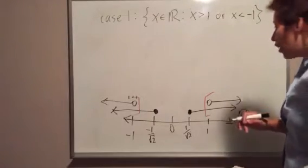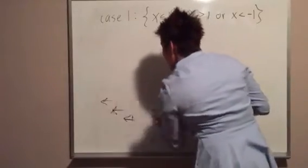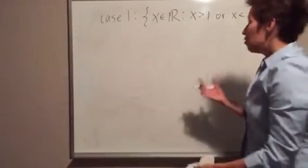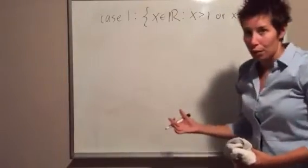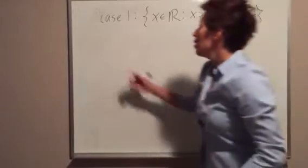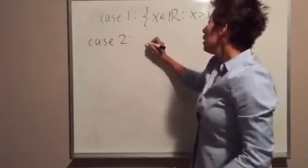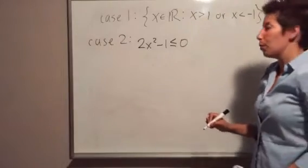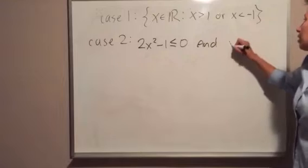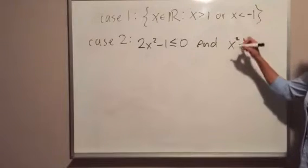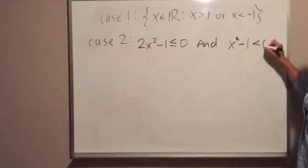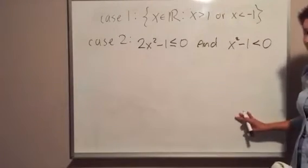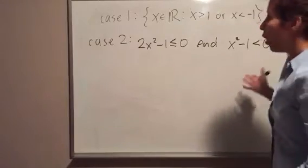Now going back to the inequality, we have one more case to consider. Remember, if you have a negative numerator and a negative denominator, the negative signs cancel and you get a positive result — which is what we want: something ≥ 0. So Case 2 is: the numerator 2x² - 1 ≤ 0 (including the possibility of being 0), and at the same time the denominator x² - 1 must be strictly less than 0 (cannot be 0).